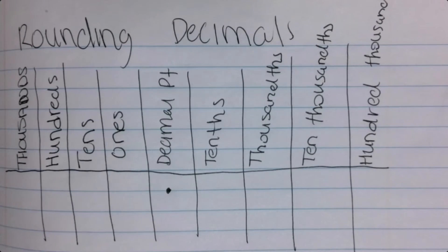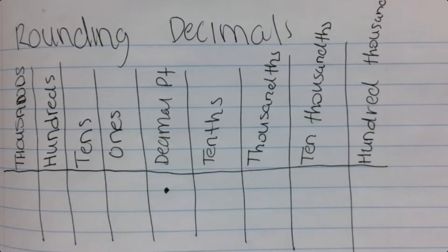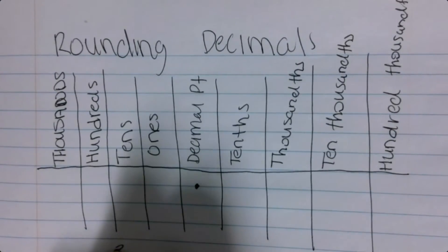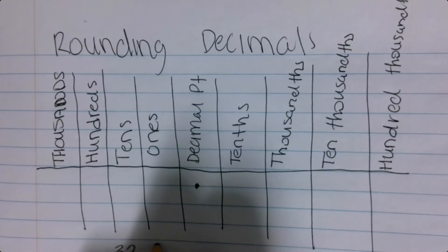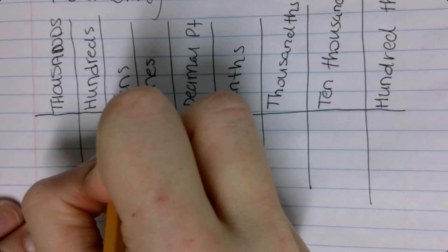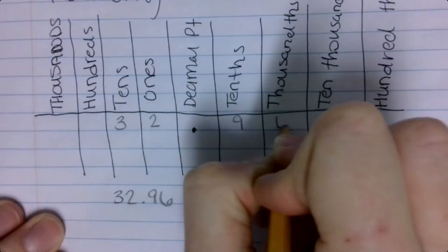What's really nice about this chart is the fact that if I give you a decimal, okay, and I tell you 32.96, you can put that into the chart, so 32.96.